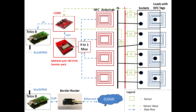Multiple such setups are present around the entire house to accommodate all the sockets. A smart meter is also included, consisting of a Telos B mote connected to a BeagleBone Black which acts as the edge router and puts the aggregated data onto the internet.